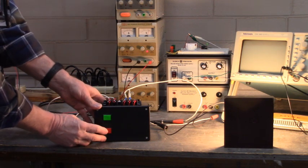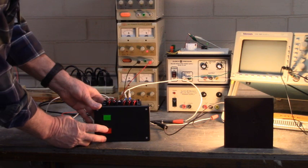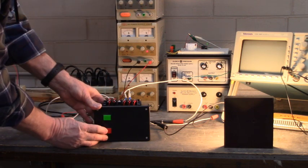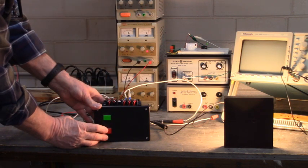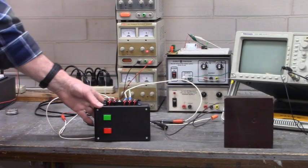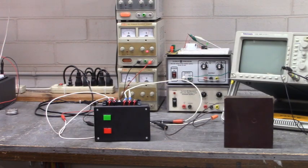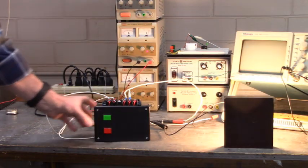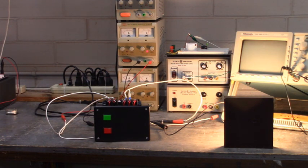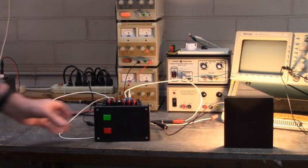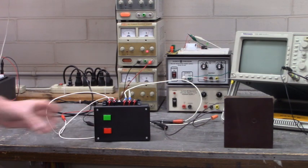The relay is energized and self-latched on. The red button disconnects the 24-volt power supply from the relay coil and it unlatches. Isn't that amazing? Self-latching relay.